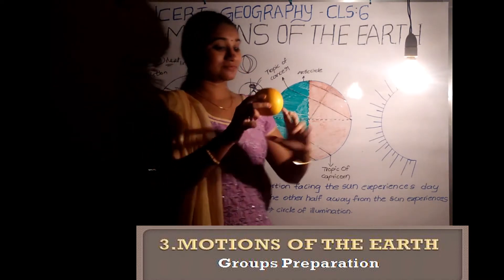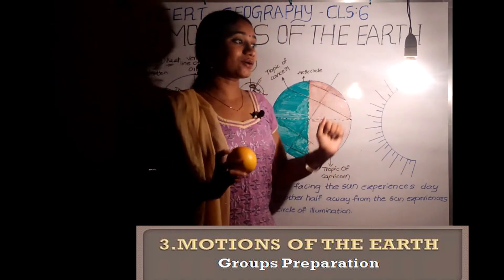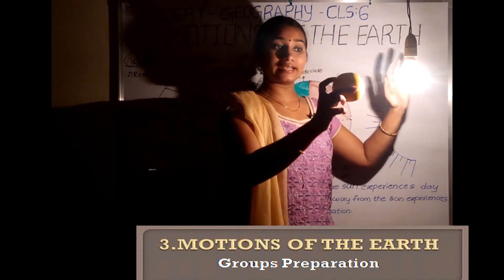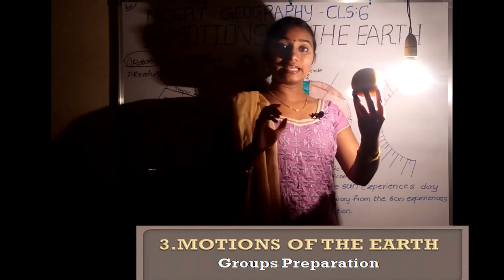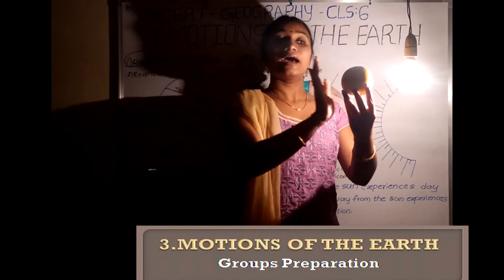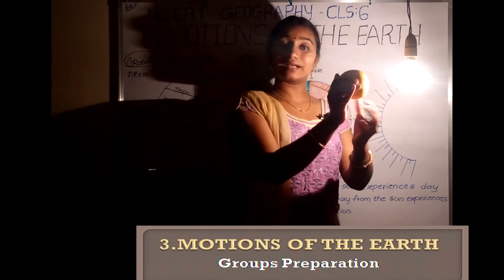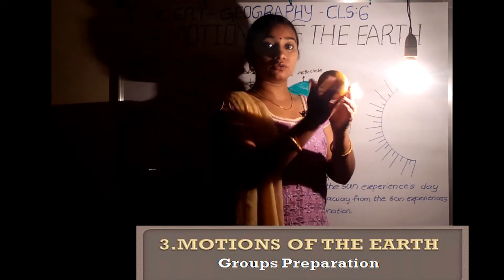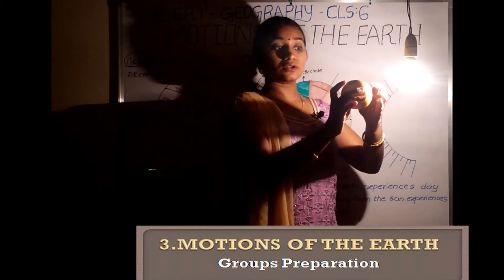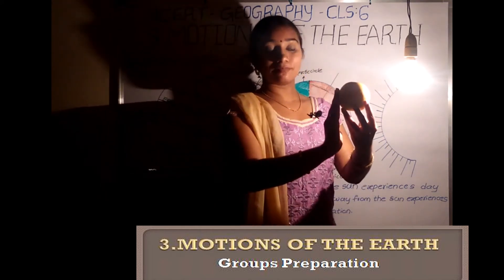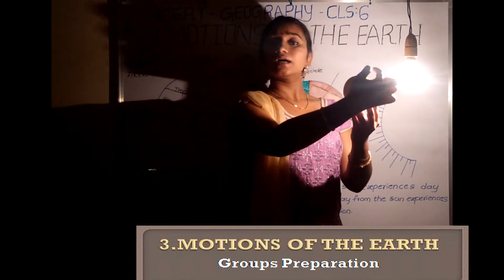This is a practical demonstration. This is the Earth and this is our artificial sunlight. Half of the Earth is facing the sunlight, and the other half of the Earth is dark. In the dark half, we experience night, and in the lit half, we experience day. The Earth rotates from west to east, so one half experiences day while the other experiences night.